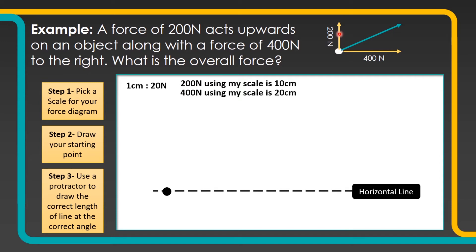Using my scale I'm going to work out how large these lines are going to be. I'm going to draw in a 200 newton force going up — using my scale, that's going to be 10 centimetres long, since 1 centimetre is 20 newtons. Then my 400 newton line to the right is going to be 20 centimetres long, again using my scale.